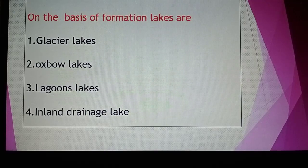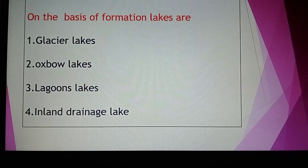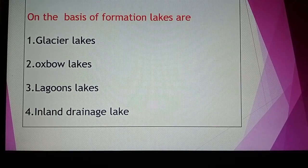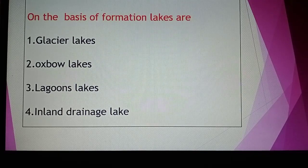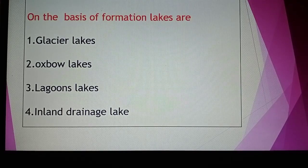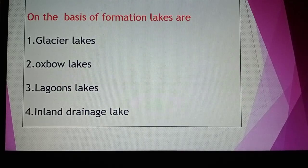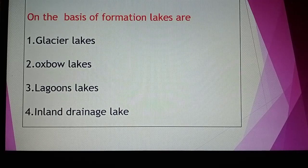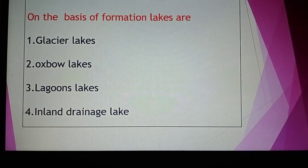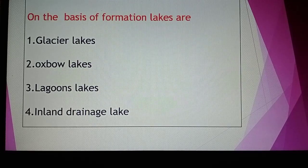On the basis of formation, lakes are formed on four bases: first, glacier lakes; second, oxbow lakes; third, lagoon lakes; and fourth, inland drainage lakes. In the Himalayas, especially in the Himadri region which is snow-bound, glaciers melt and the resulting water forms lakes in the land — these are called glacier lakes.